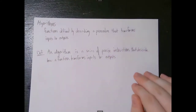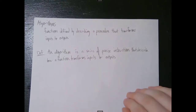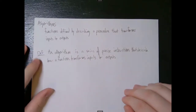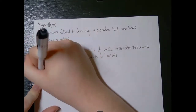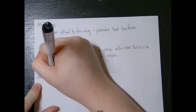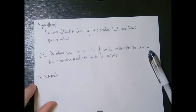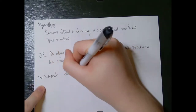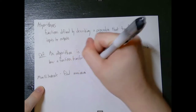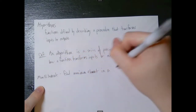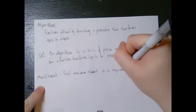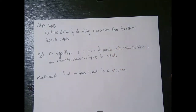Because once we have a series of precise instructions, it becomes pretty trivial to turn those instructions into code. So let's talk about an example problem — the max element problem. What the max element problem does is it tries to find the maximum element in a sequence. Given some n-tuple, you're trying to find the largest value inside of that n-tuple.